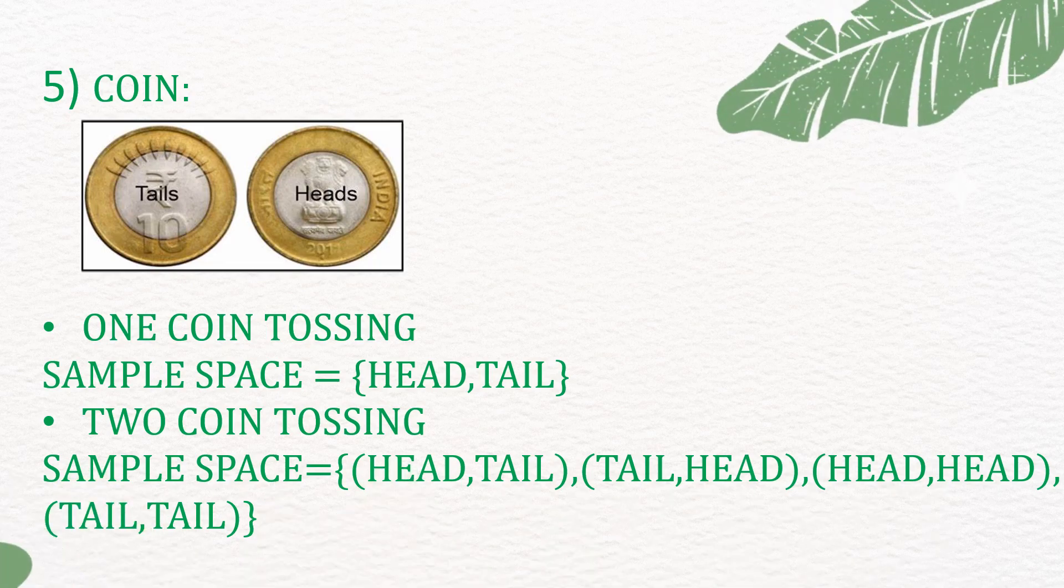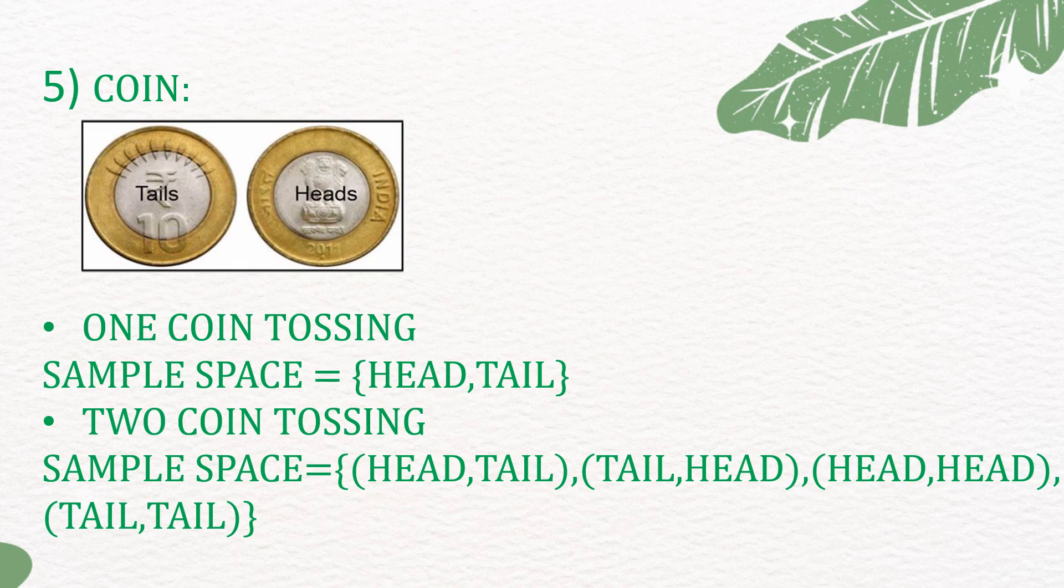Two coin tossing, the sample space is {(head, tail), (tail, head), (head, head), (tail, tail)}.